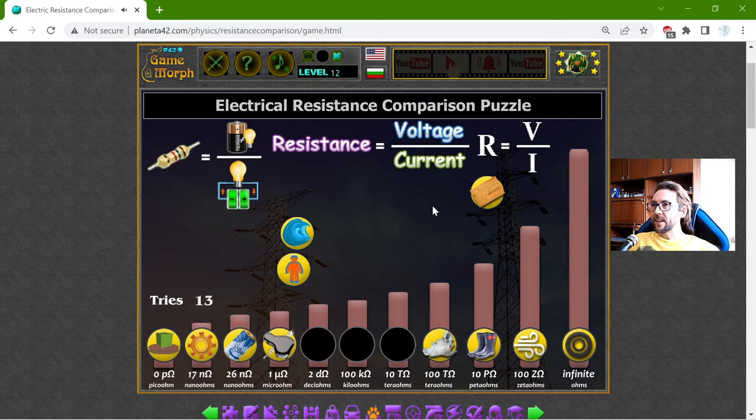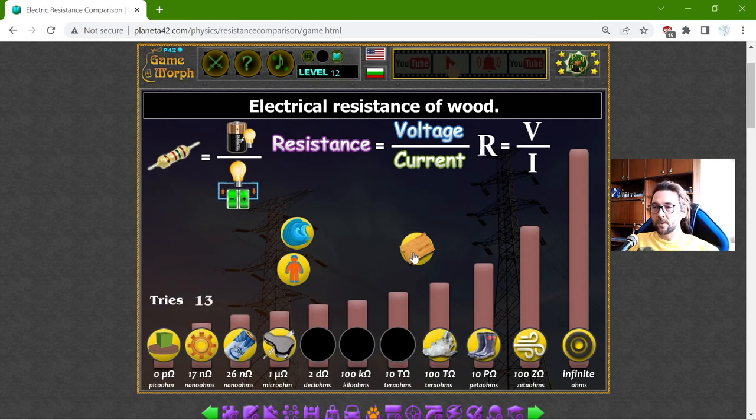All right. Now, the wood, the electrical resistance of wood, but this is dry wood. Okay? Because if it is wet, it lowers its resistance. So, the dry wood should be 10 tera ohms. This is a lot of resistance.